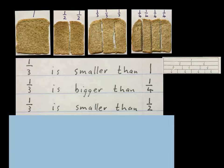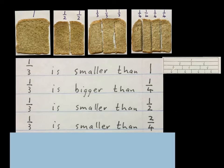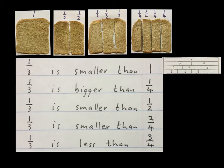The next one says: a third is smaller than a half. There's my third — it is smaller than the half. The next one says: a third is smaller than two quarters. So the third is smaller than the two quarters. In your discussion you can then say the two quarters is a half again. The last one on thirds says: one third is less than three quarters. So this one third is less than those three pieces.